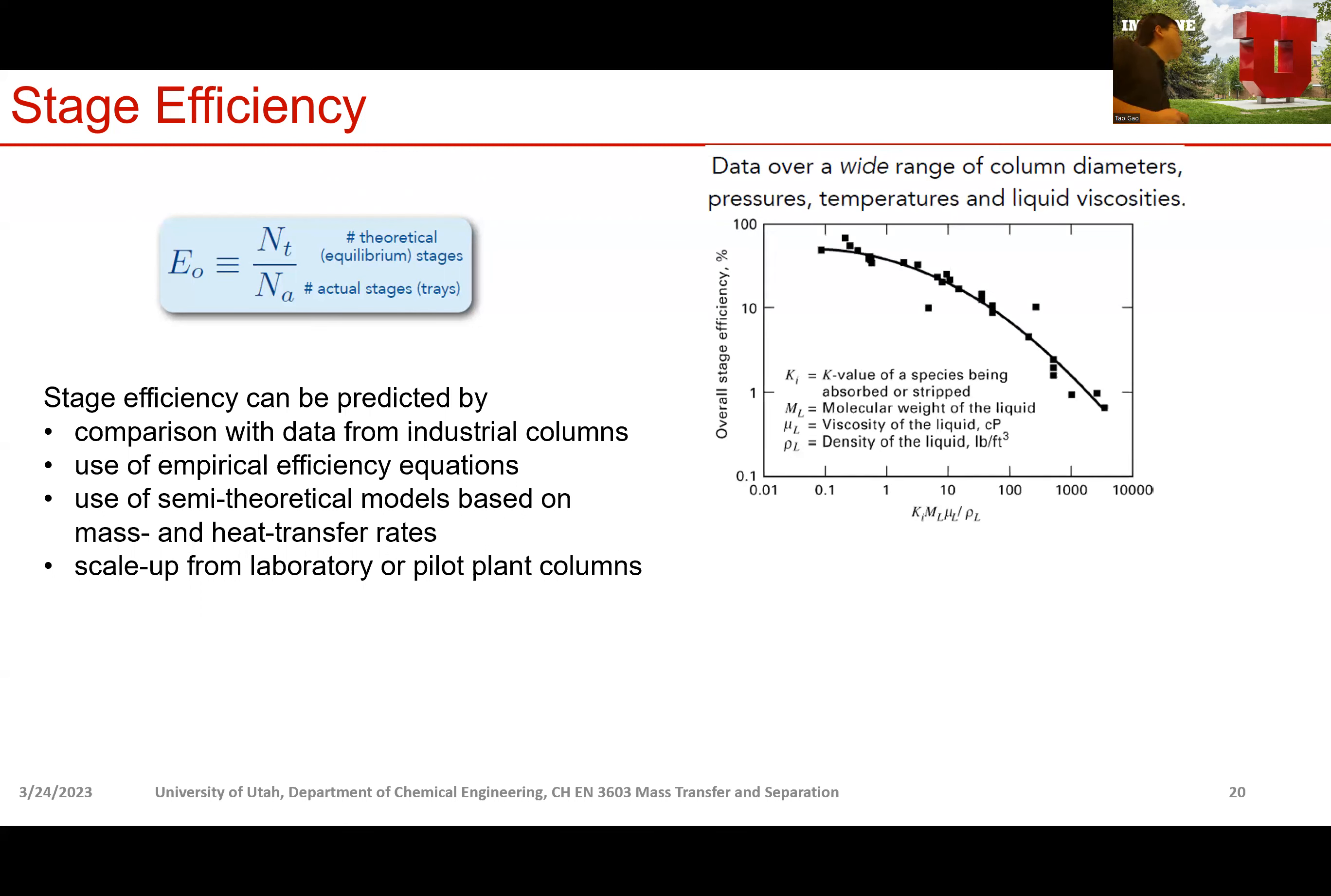One of them is this one, in which it shows the overall stage efficiency as a function of this dimensionless number. This dimensionless number depends on the K value, molecular weight of the liquid absorbent, the mu is the viscosity, and the rho is the density, as you can see here. As this dimensionless number increases, you have a reducing stage efficiency.